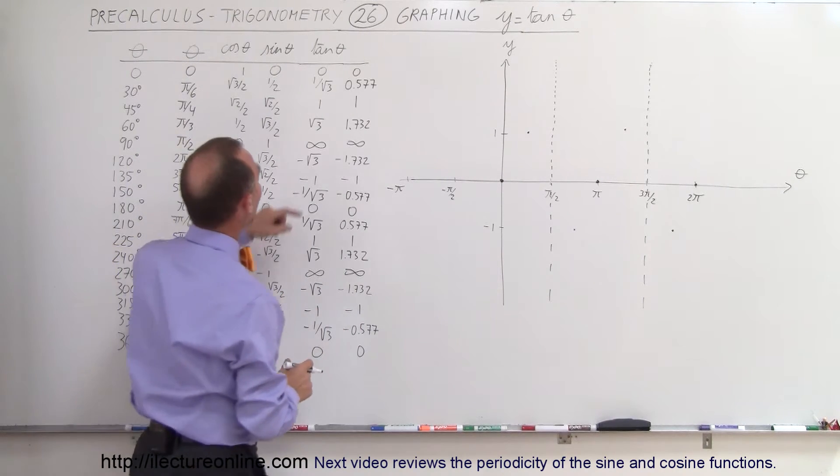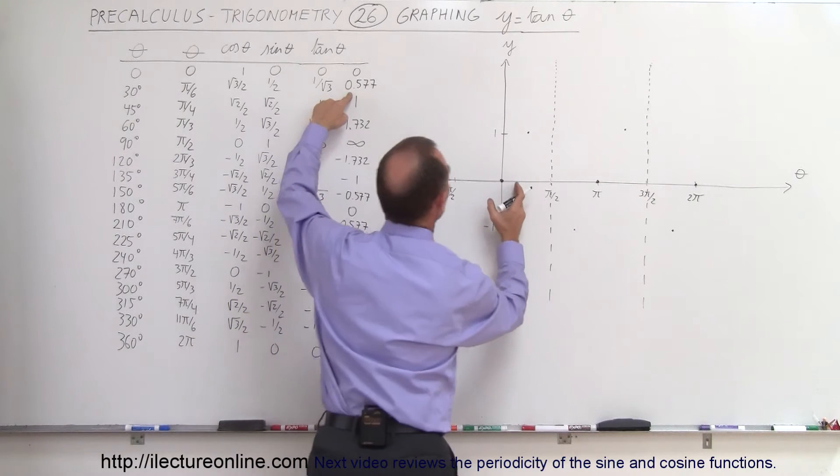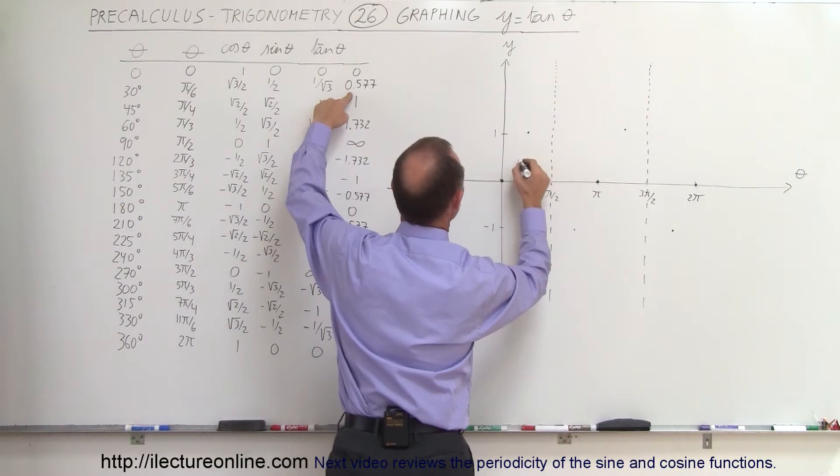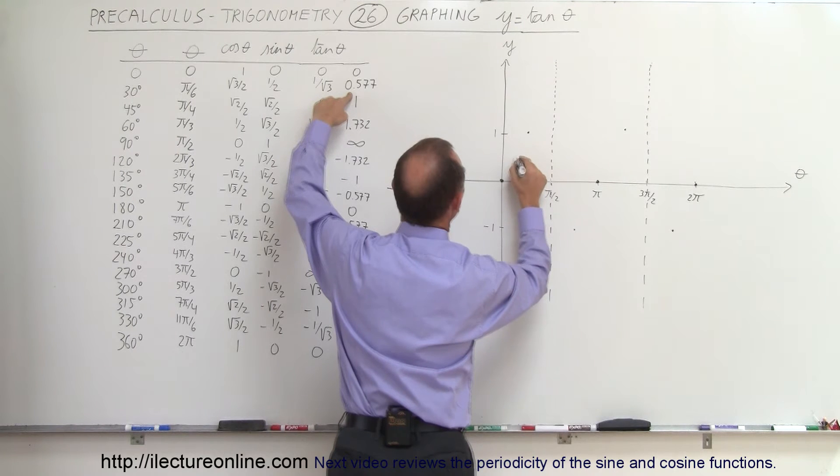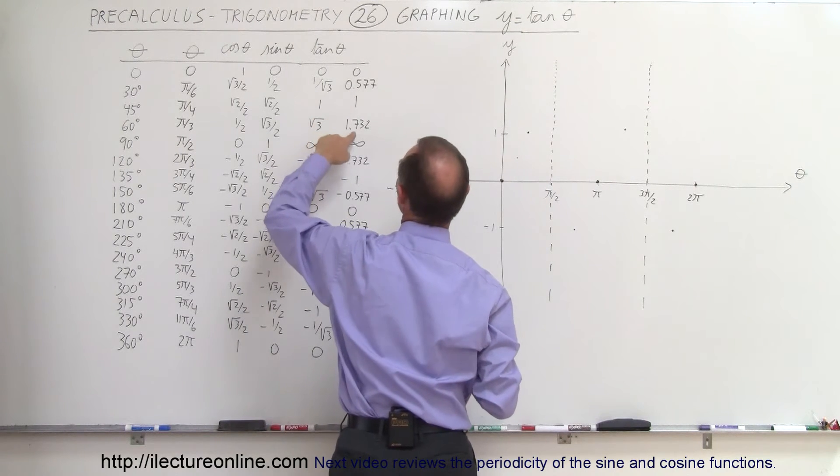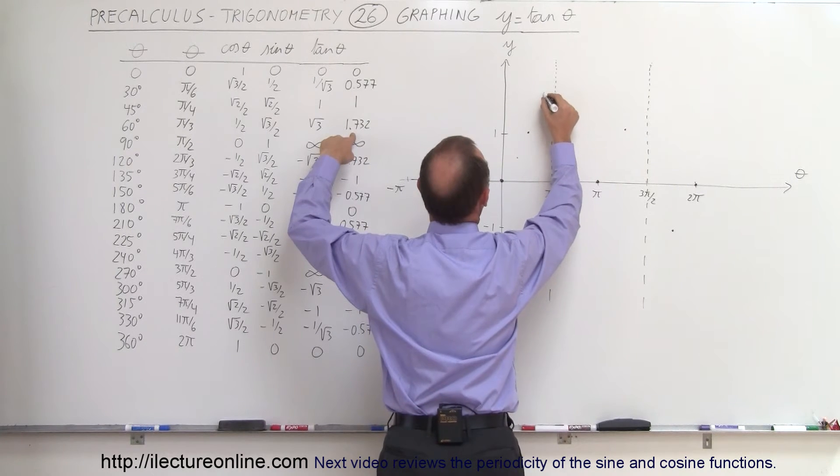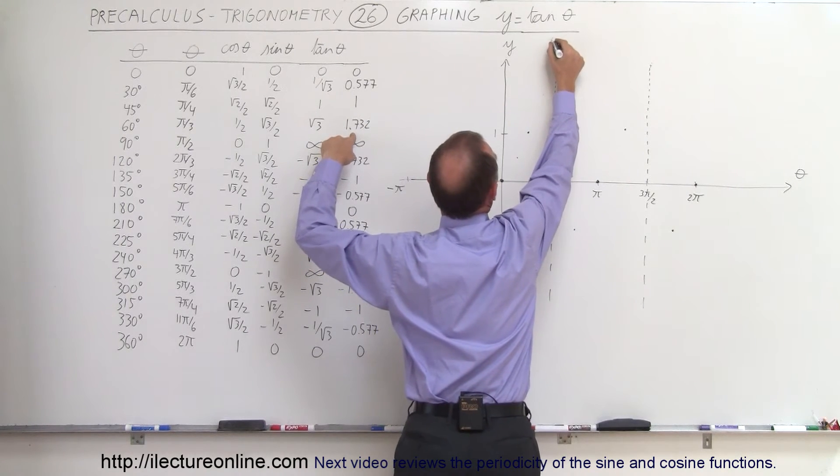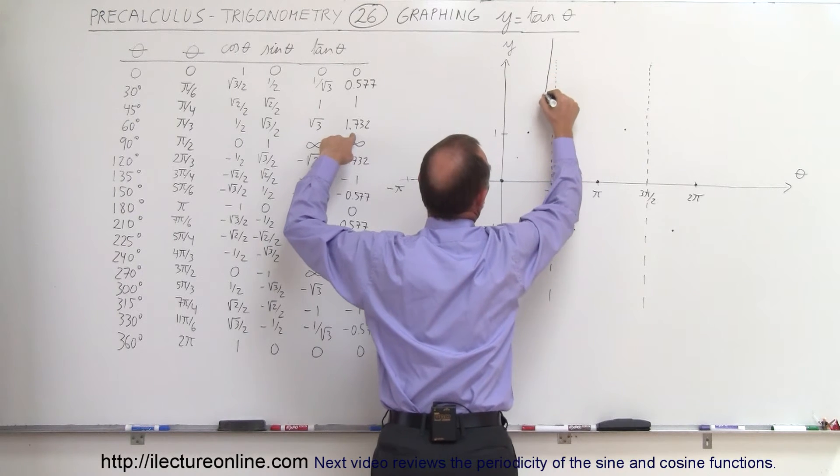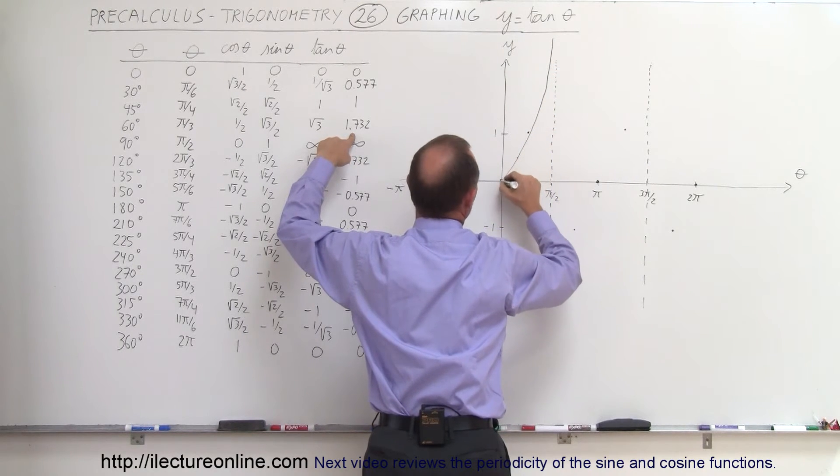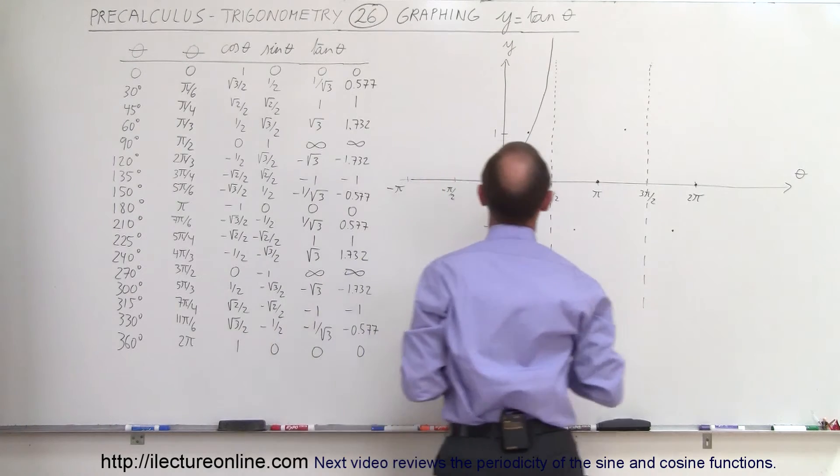Now to see what happens for the rest. So at 30 degrees, which is about right here, it's 0.577. So that would be about there. And then at 60 degrees, which is right over here, it's 1.732. So what we can see is that we have an asymptotic curve that goes to 0 here. And then we'll find out what happens after that.